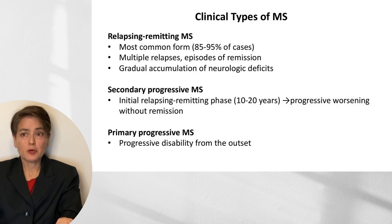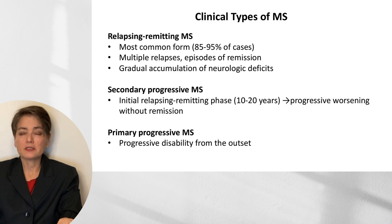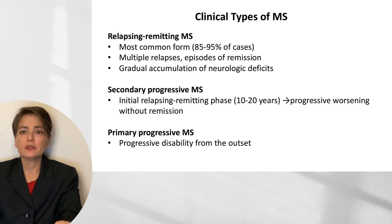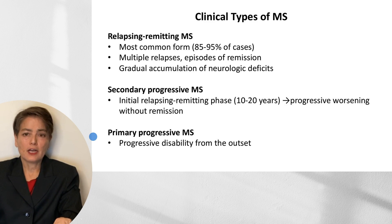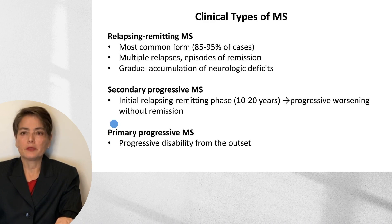There are three clinical types of multiple sclerosis. Relapsing-remitting multiple sclerosis is the most common form, about 85 to 95% of cases, characterized by multiple relapses with interspersed episodes of remission; patients rarely return to baseline between episodes, with gradual accumulation of neurologic deficits. Secondary progressive multiple sclerosis begins with relapsing-remitting disease over about 10 to 20 years and then progresses to worsening without remission. Primary progressive multiple sclerosis has progressive disability from the outset with no or minimal remission.